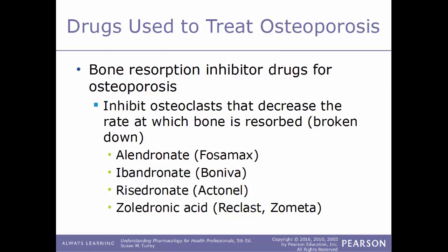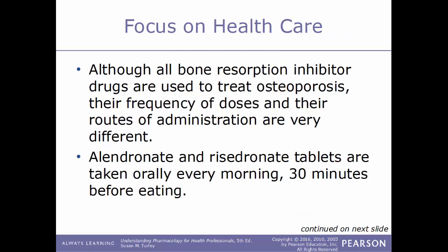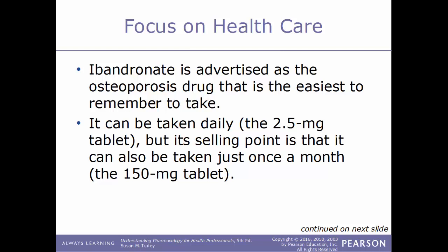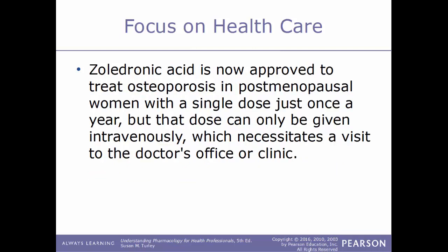One category of drug used to treat osteoporosis are bone resorption inhibitor drugs, which work by inhibiting osteoclasts to decrease the rate at which bone is reabsorbed or broken down. Examples include alendronate known as Fosamax, ibandronate known as Boniva, risedronate known as Actonel, and zoledronic acid known as Reclast or Zometa. Although all bone resorption inhibitors treat osteoporosis, their dosing frequency and routes differ. Alendronate and risedronate tablets are taken orally every morning 30 minutes before eating. Ibandronate can be taken daily or once monthly at 150 mg. Zoledronic acid is approved for postmenopausal women with a single dose given once a year, administered intravenously at a doctor's office or clinic.